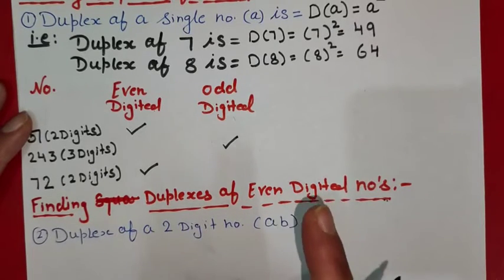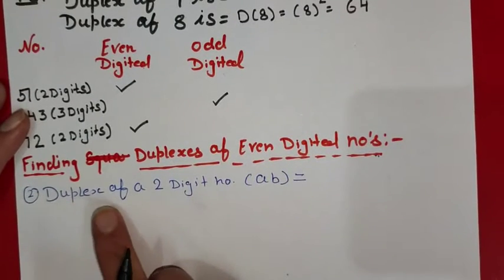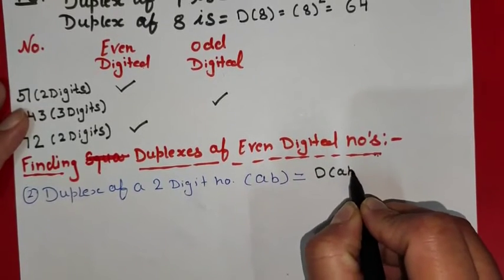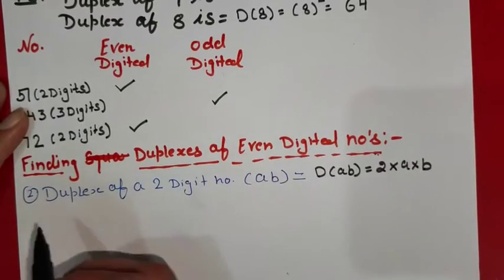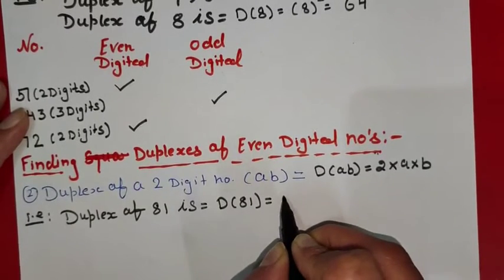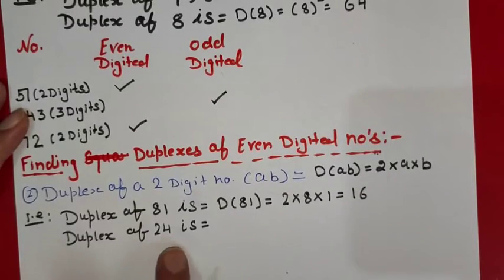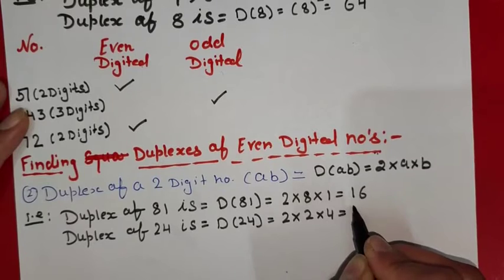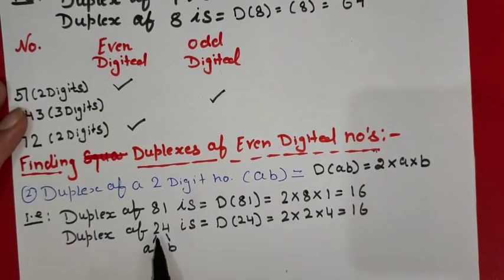For even-digited numbers, let's start with a two-digit number ab. The duplex of ab is 2 × a × b. For example, duplex of 81 = 2 × 8 × 1 = 16. Duplex of 24 = 2 × 2 × 4 = 16. So the duplex of a two-digit number ab is 2ab.